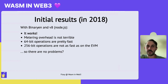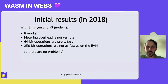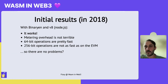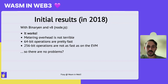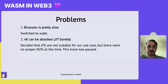We got everything done to an initial prototype level, and these were results in 2018. Back then we used Binarian and V8, which is the JavaScript engine of Chrome also used in Node.js. The good results were that everything works, the metering overhead is not terrible, 64-bit operations are really fast compared to the EVM, and 256-bit operations are not as fast as we hoped and definitely not as fast as they are on the EVM. But this doesn't look too bad.